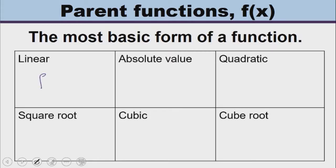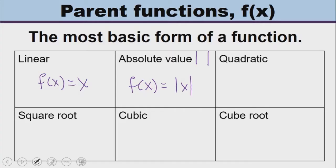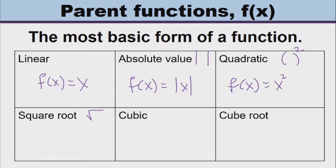When you say linear, the most basic form of linear is f of x equals x. That's the most basic form. For absolute value, we denote it by the absolute value symbol, so the absolute value parent function would be the absolute value of x. Quadratic is distinguished by the exponent of two, so the parent function for quadratic would be x squared. And for square root, we use the square root symbol, so the basic form of square root would be the square root of x.